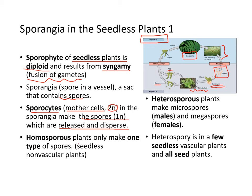Homosporous plants only make one type of spore. Seedless non-vascular plants are these types of plants. Heterosporous plants make microspores (male) and megaspores (female). Heterospory is found in a few seedless vascular plants and all seed plants.